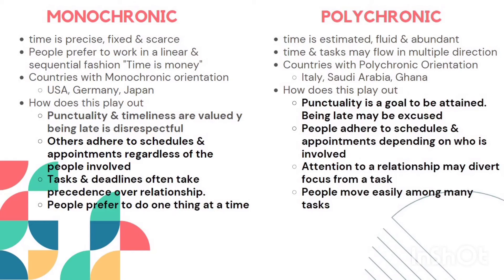Tasks and deadlines take precedence over relationships. Even if someone is close to them or a friend, they'll always prefer the task or deadline over the relationship. People prefer to do one thing at a time, focusing on a single task rather than working on multiple things simultaneously.